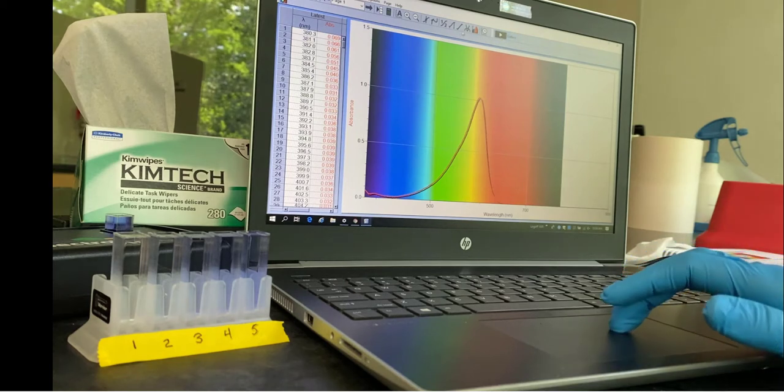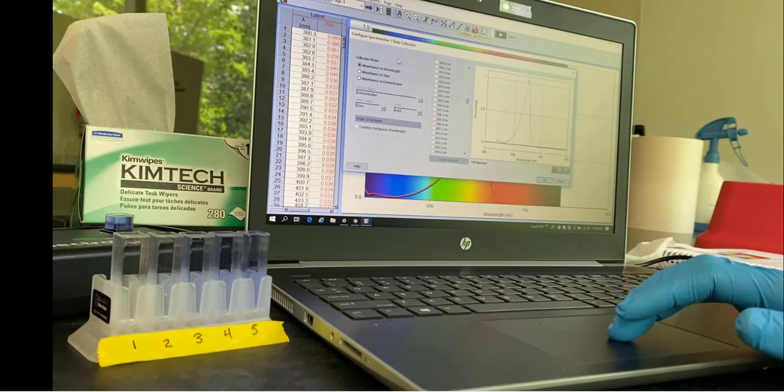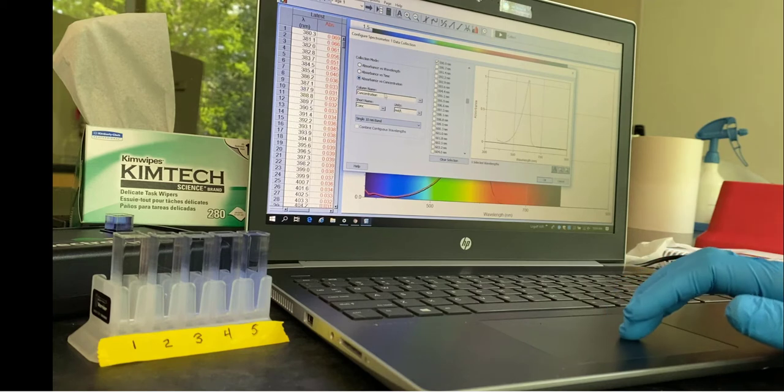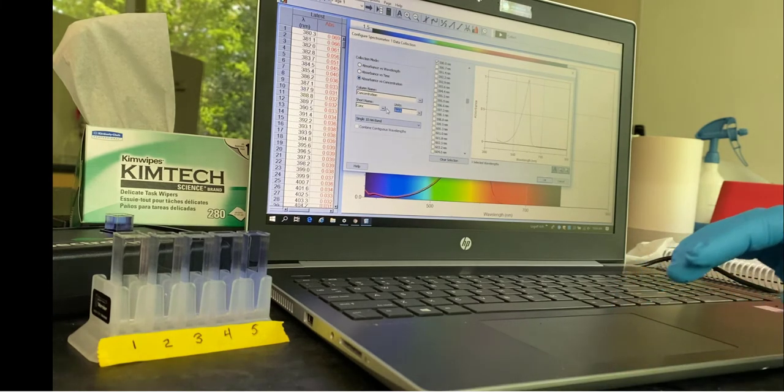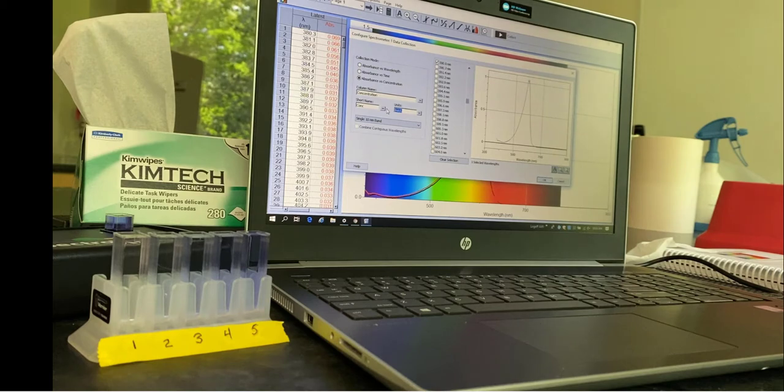What we're doing is we're picking the optimal wavelength for our experiment and the computer does this automatically. And now I'm telling the computer for the rest of the experiment to generate a graph that's going to be absorption on the y-axis and concentration on the x-axis at that specific wavelength that is optimal for bromophenol blue.